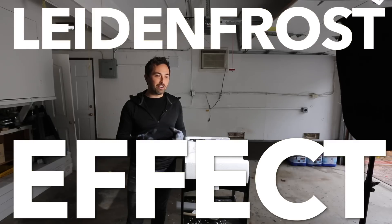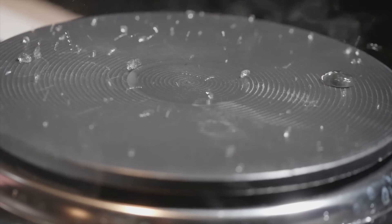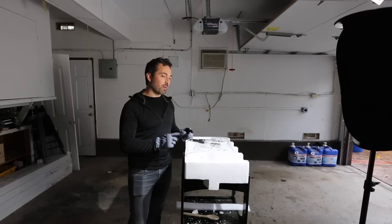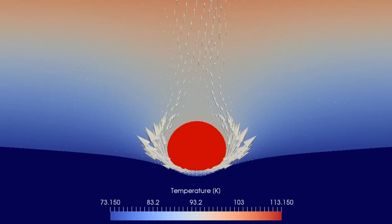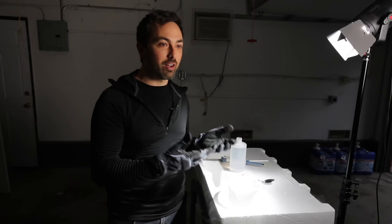You've probably heard of the Leidenfrost effect — that's when a volatile droplet like water levitates over a hot surface because it's floating on a little cushion of its own vapor. Here I'm going to try to create the inverse Leidenfrost effect, where we levitate a droplet on a bath of liquid nitrogen. It's inverse because the droplet is not actually creating the vapor — it's the bath beneath, the liquid nitrogen, that's creating the vapor.